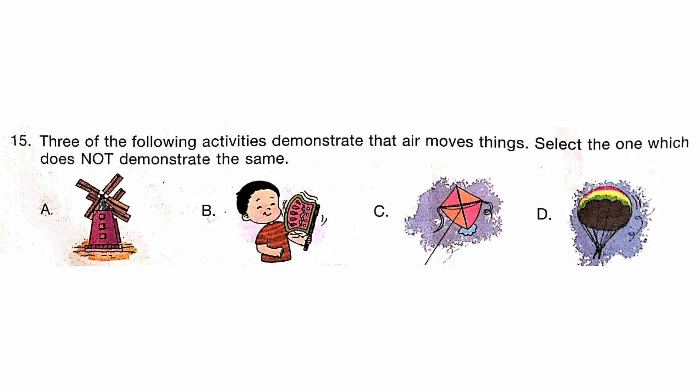Three of the following activities demonstrate that air can move things. Select the one which does not demonstrate the same. Answer is Option B.